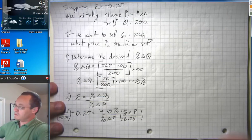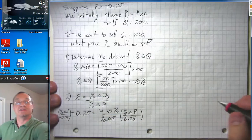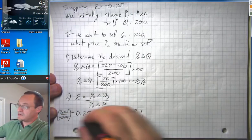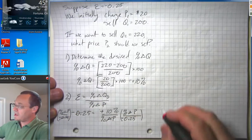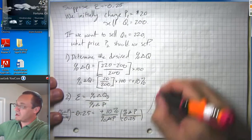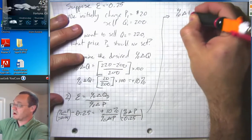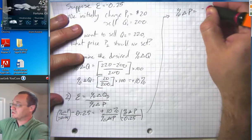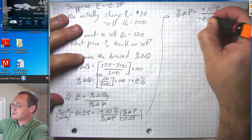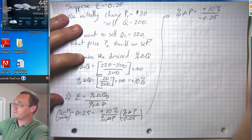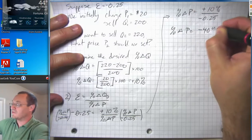Pay no attention to the man behind the curtain. So we've got this going on here. These two percent change in price cancel. This negative one quarter and this negative one quarter cancel. And so we are left with percent change in price equals positive 10 percent over negative one quarter, or percent change in price equals negative 40 percent.